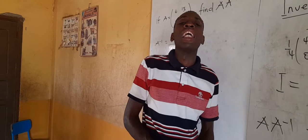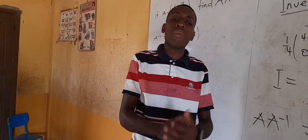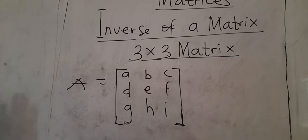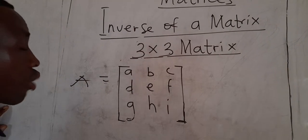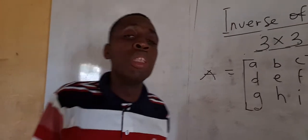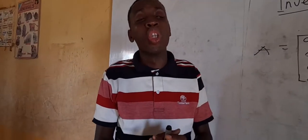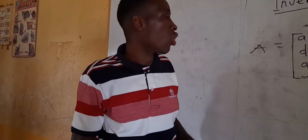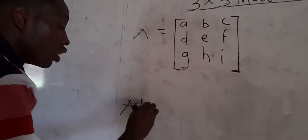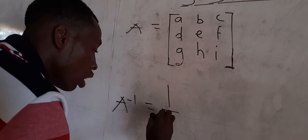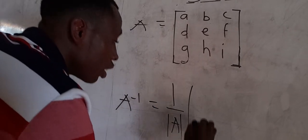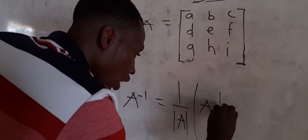The next topic is how to find the inverse of a 3×3 matrix. This is a little bit tricky, so please pay close attention. The inverse of a 3×3 matrix uses the same formula: one over the determinant times the adjoint.